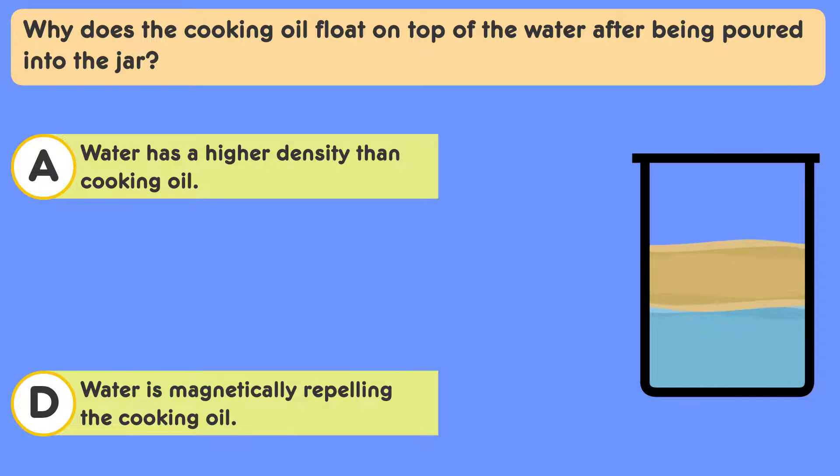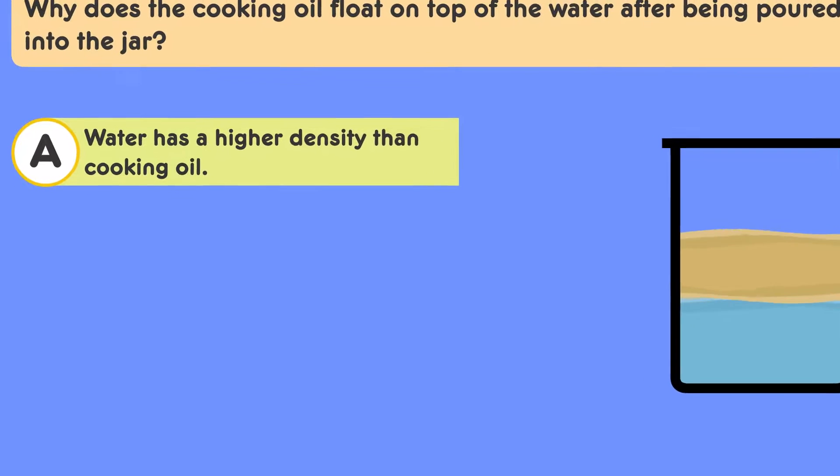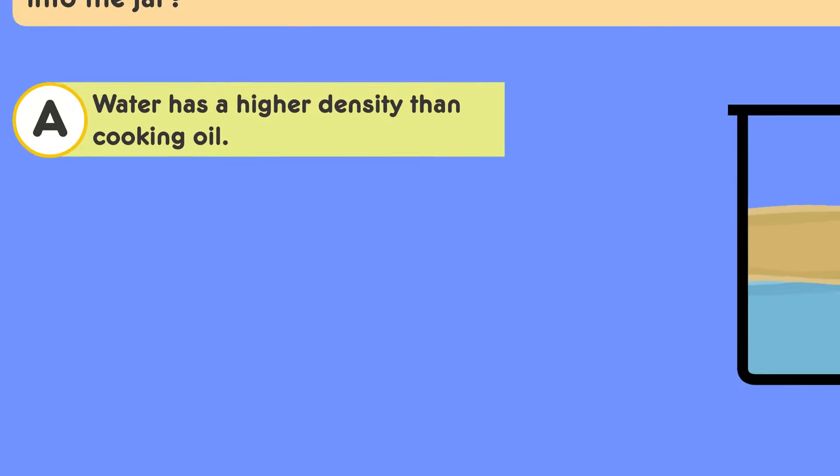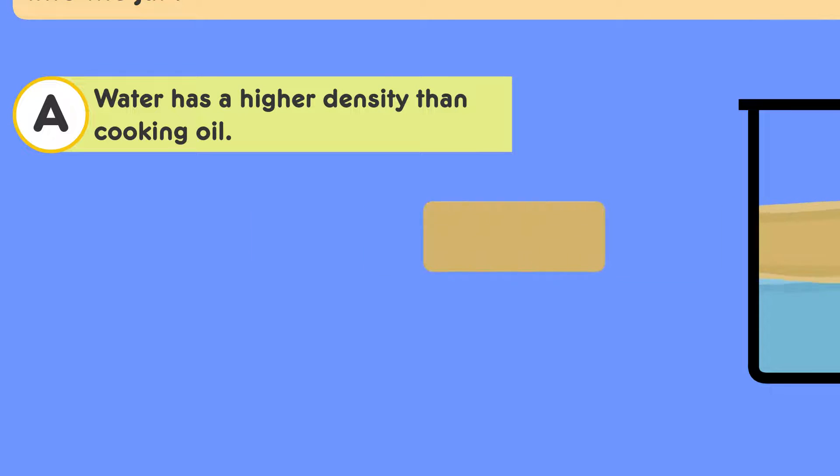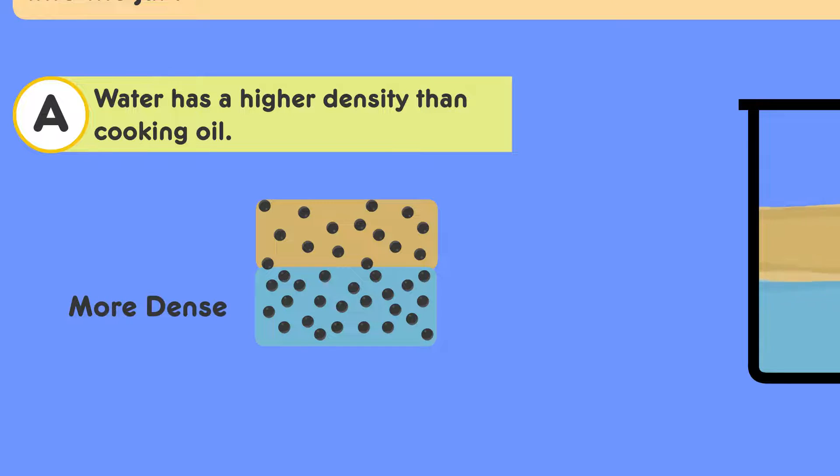Engage with these guiding questions for each choice. A. Water has a higher density than cooking oil. Let's investigate this. How does the difference in density affect the layering of liquids? Now let's analyze. Explain why the liquid with lower density floats above the denser one.